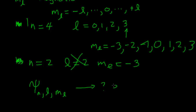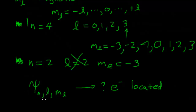That's the basics of quantum mechanics for the hydrogen atom. In a future video, we'll go through and look at these different wave functions to see what they look like — where we're likely to find the electrons, whether they're circular orbits or something different and more complicated, whether they look like shells or something altogether surprising.